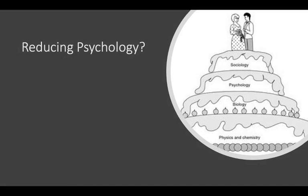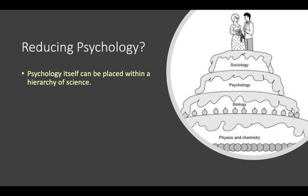Psychology itself can be placed within a hierarchy of science. You've got sociology, which is more a branch of psychology, which is a branch of biology, which is really a branch of physics and chemistry, which is a branch of maths. You're more precise at the bottom and more general at the top. Sociology looks at society; psychology looks at the person; biology looks at what's going on within the person; and physics and chemistry looks at what's going on within the biology.